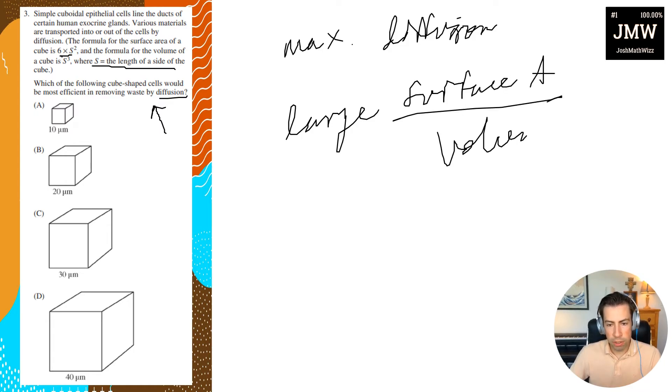It's a volume ratio, right? I want tons of surface area, but I just want a small volume. Because if I have a small volume, the material doesn't have to travel very far. And if I have a high surface area, the flux or the rate of diffusion of the material out is going to be really large.